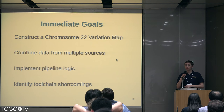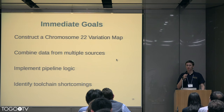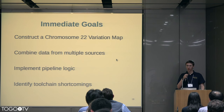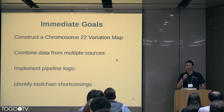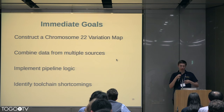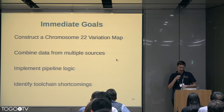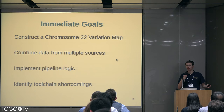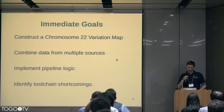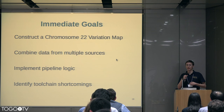That all describes a very hard project, so for my PhD thesis I decided to work on an easier project: building the chromosome 22 variation map as a validation of this idea and to demonstrate that the tool chain to build this thing can be built and that it works. My goals were to combine data from multiple sources and implement the pipeline needed to do this.